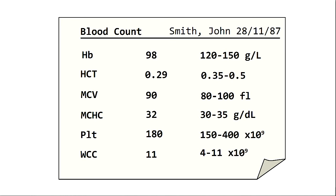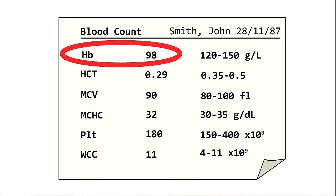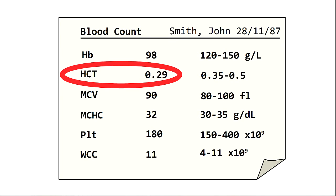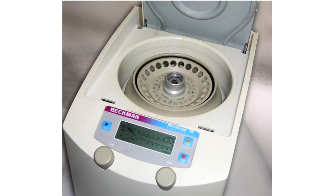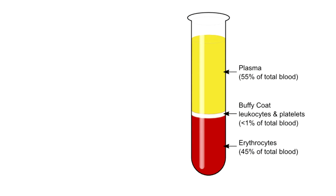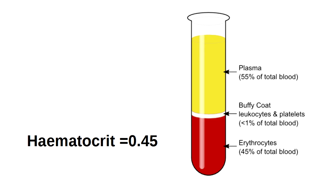When discussing anemia, most people are referring to a hemoglobin concentration which is below the normal range for a population. Less often, anemia is discussed in terms of the hematocrit, which refers to the red blood cell portion of a centrifuged blood sample.